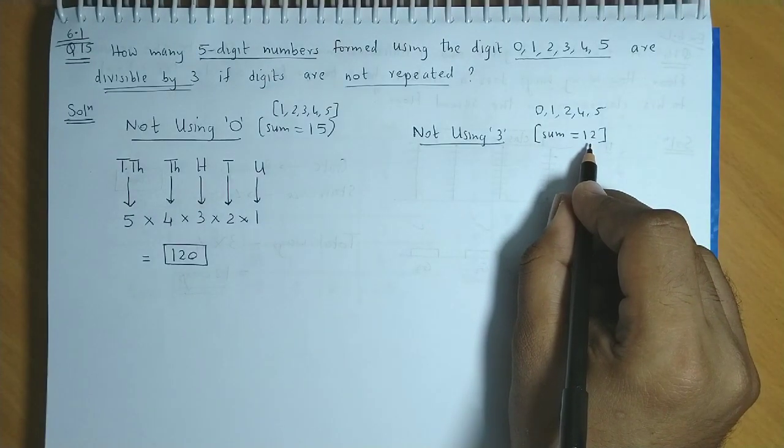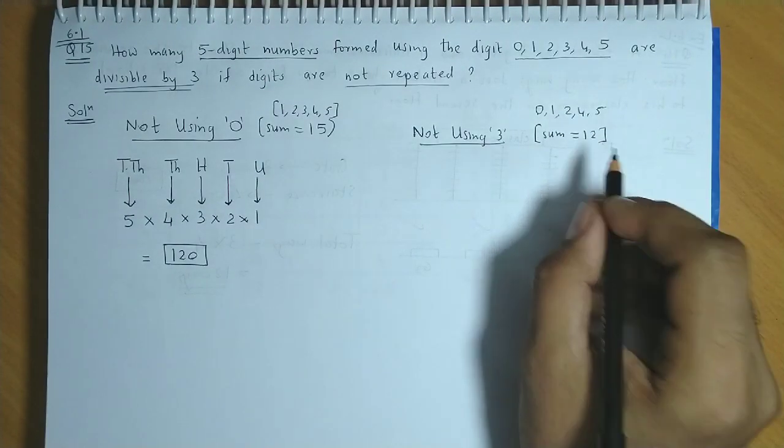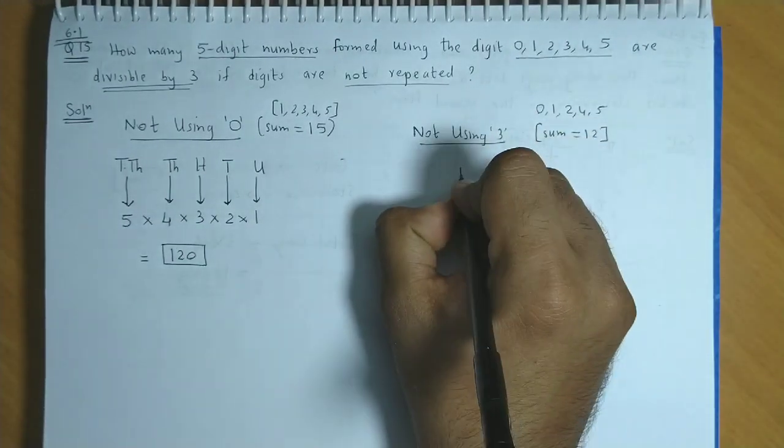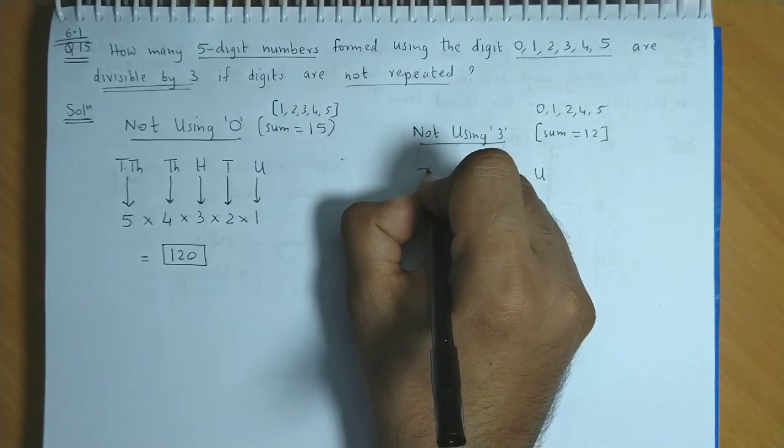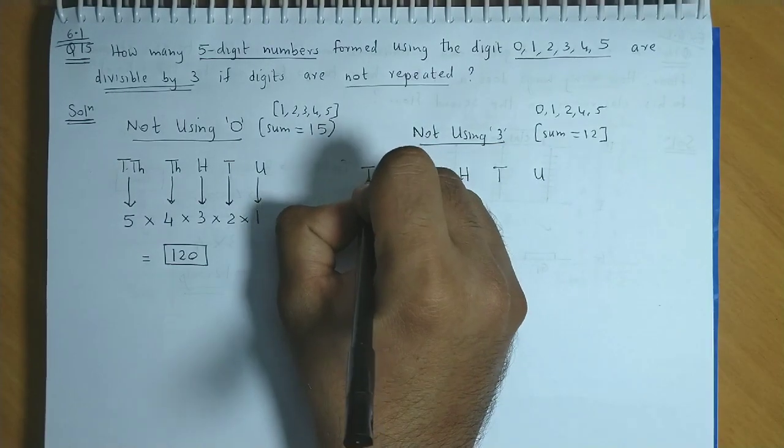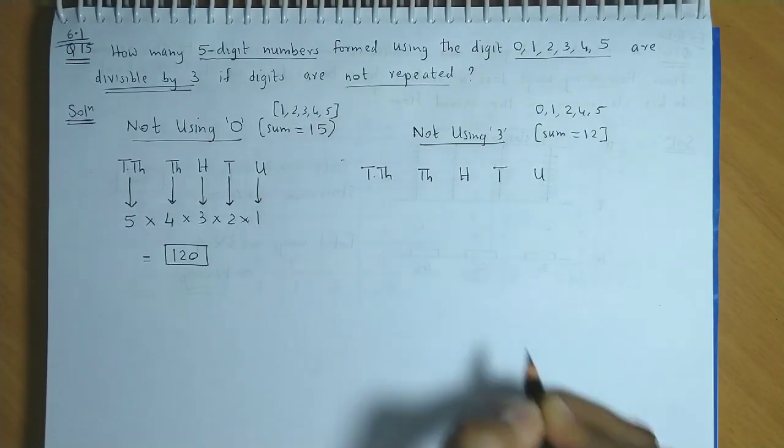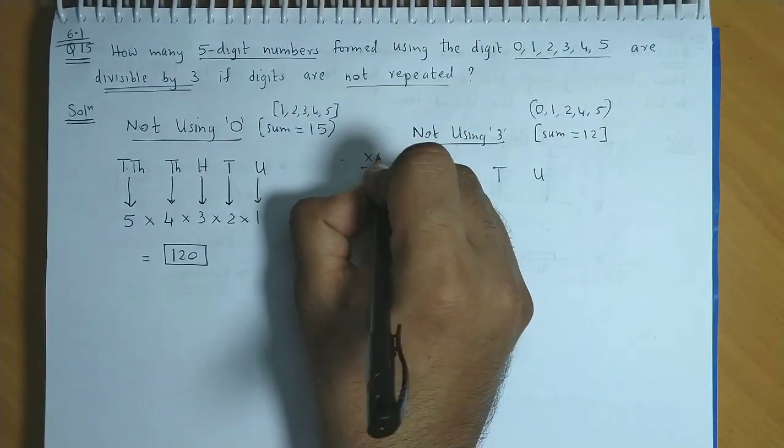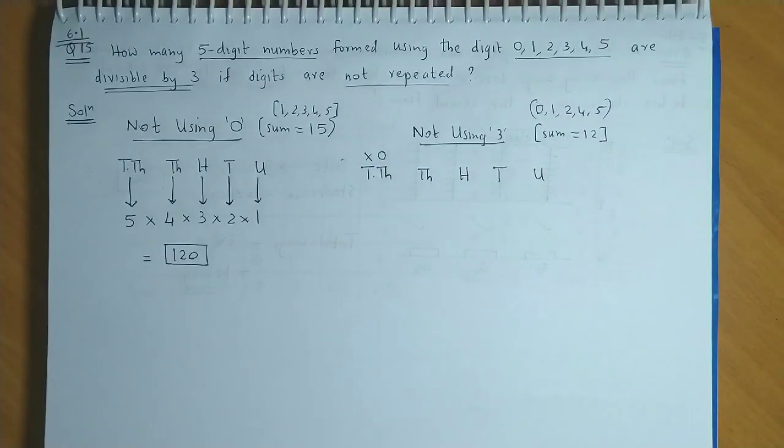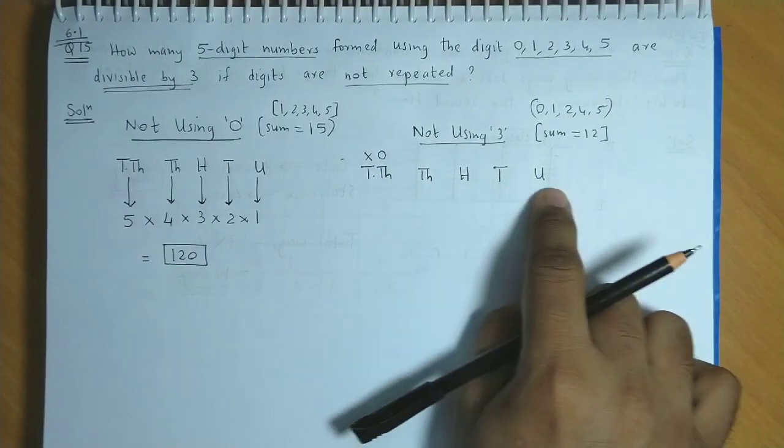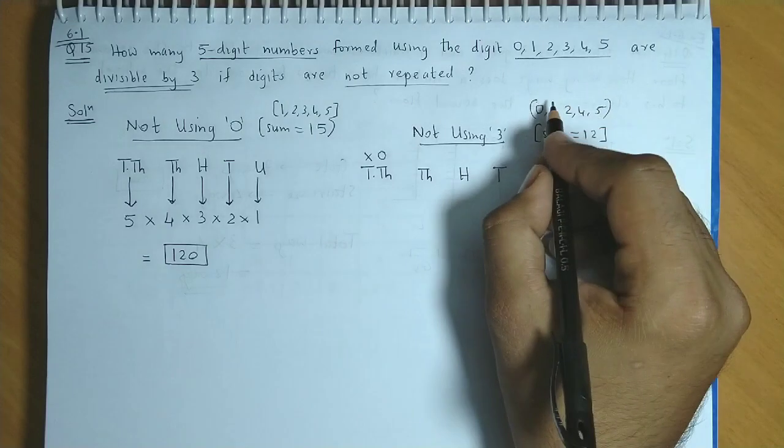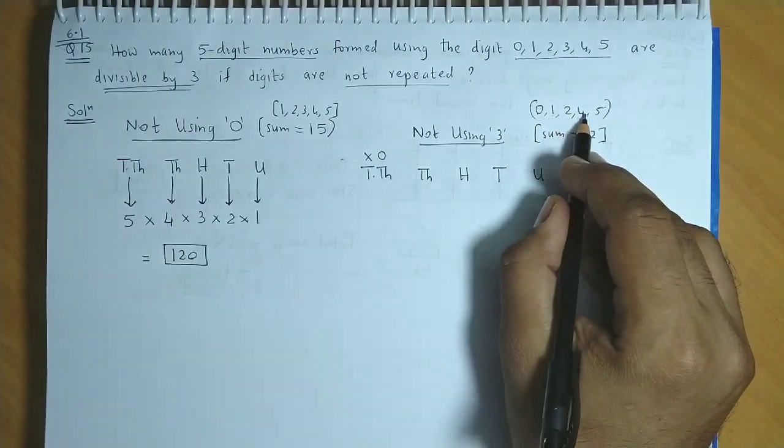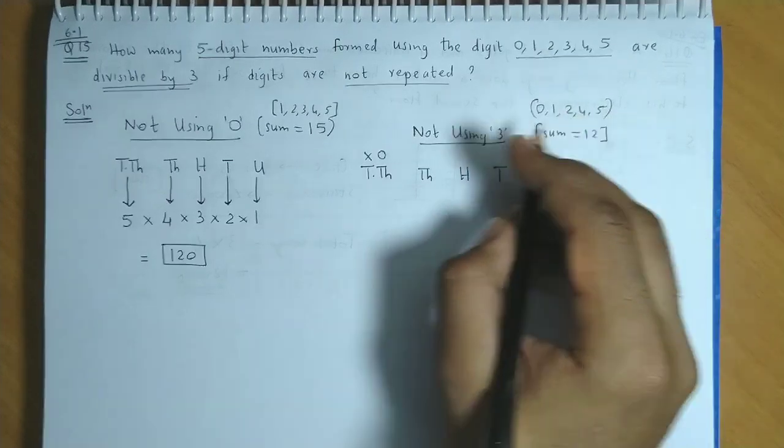We have the units place, tens place, hundreds place, thousands place, and ten thousands place. This set has 0, but we cannot use 0 in the ten thousands place, otherwise it would become a 4 digit number. So for now we set aside 0. We are left with 1, 2, 4, and 5. There are 4 options available.